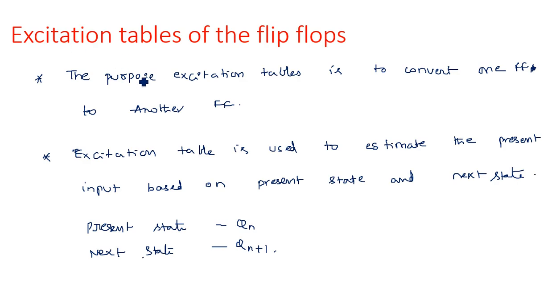One thing you have to remember: before going into the excitation tables, you should know very well the truth tables of those flip-flops. As we have four flip-flops — SR, JK, D, and T — when you are going to derive the excitation tables, you should know the truth table. Without knowing the truth table, you cannot derive the excitation tables.